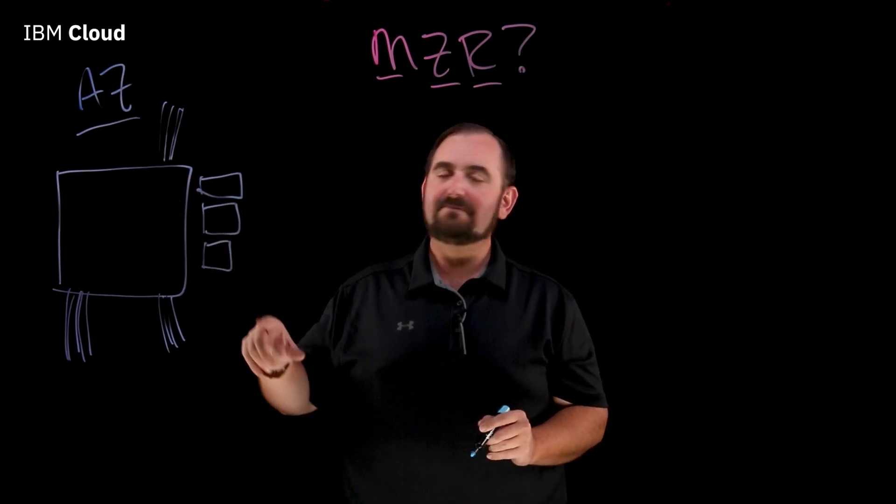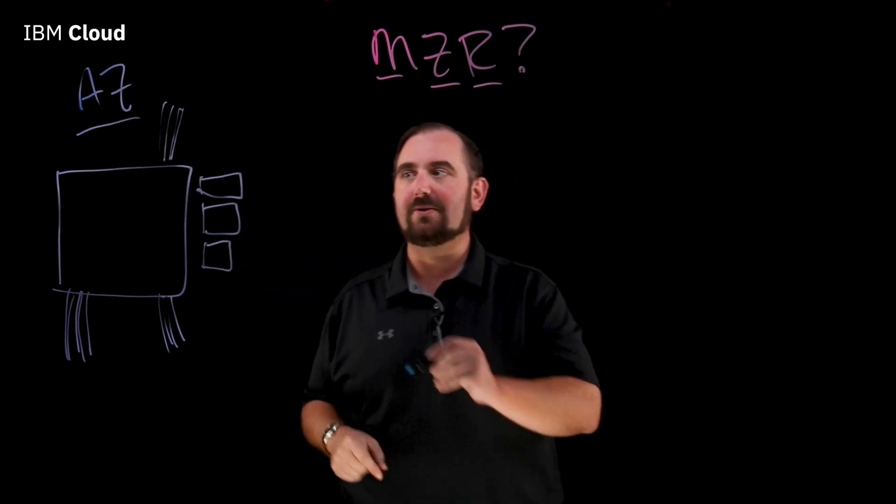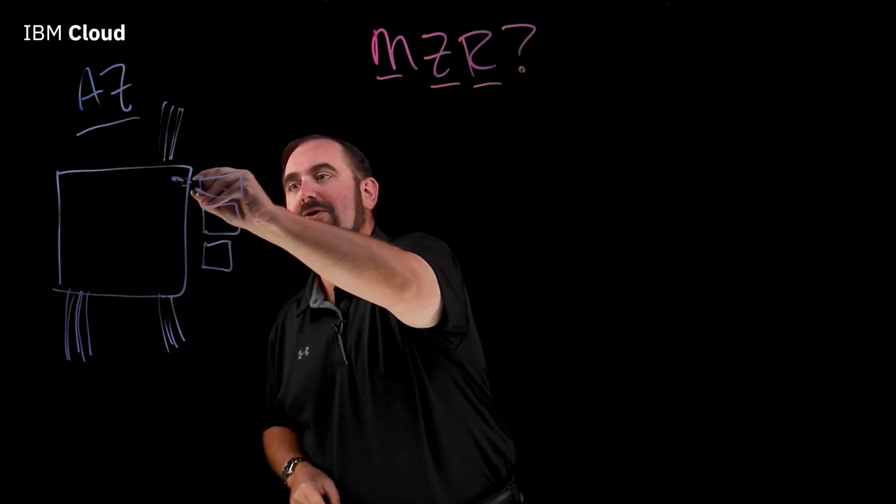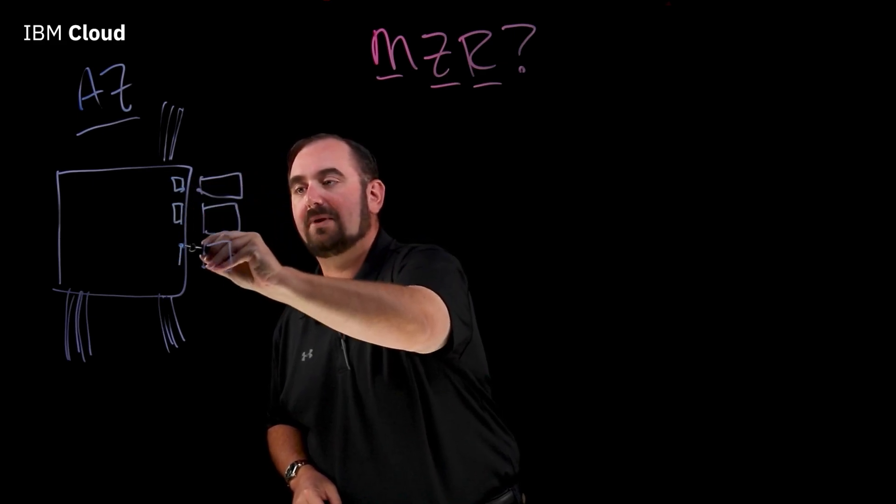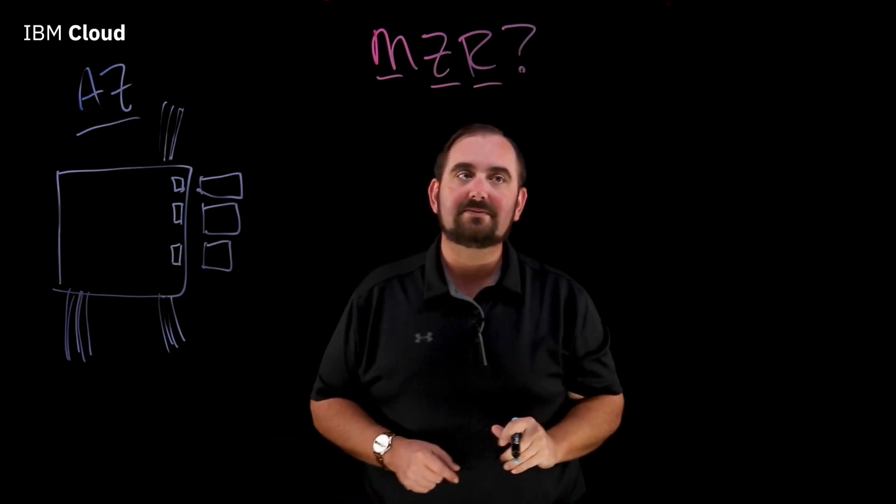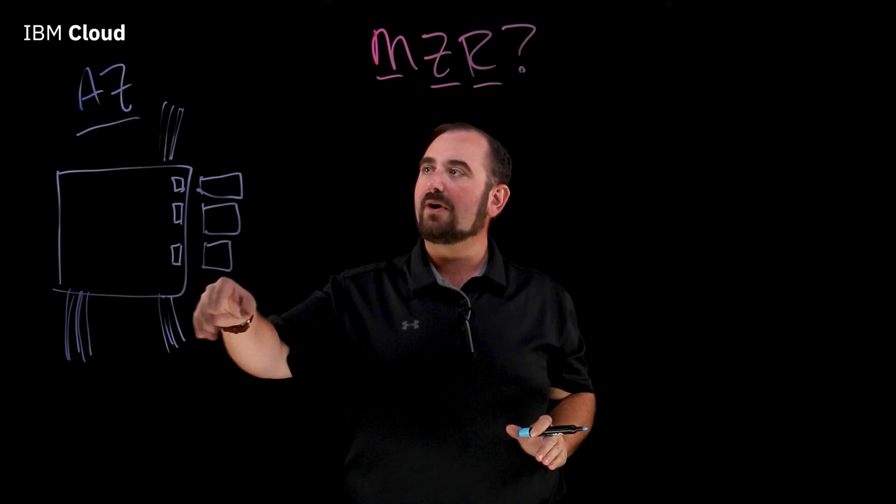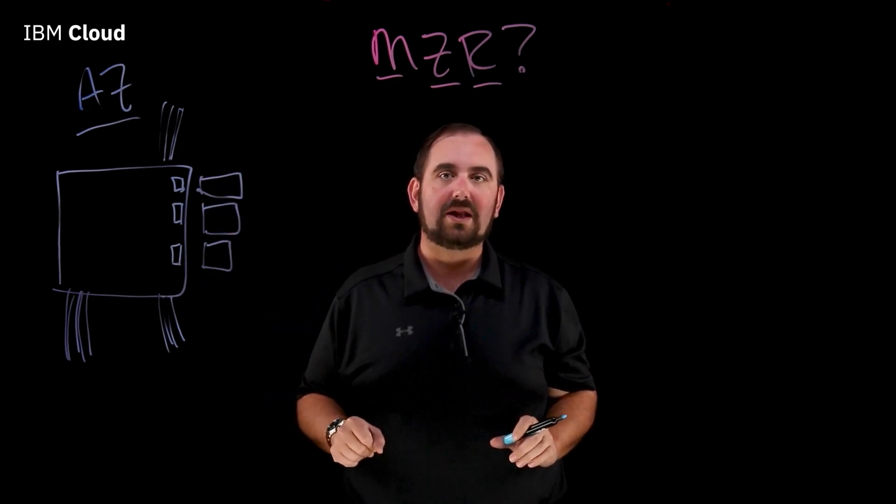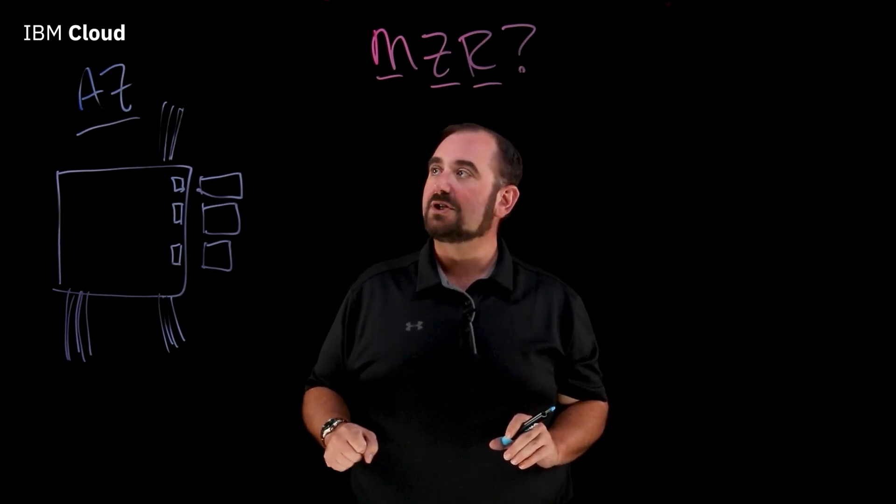And in addition to those generators, in order to bridge the gap between when the power goes off and the generators go on, we have huge UPS systems. UPS is an uninterruptible power supply. And those UPS systems are sized to get us 15 to 20 minutes between when the power comes off and the generators come all the way online. Now, in practice, we don't need anywhere near that much time, but it's just a good thing to have.